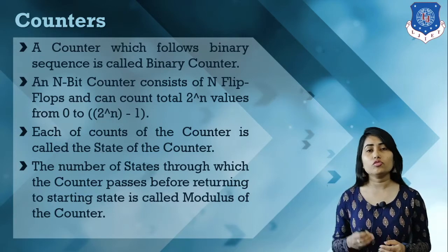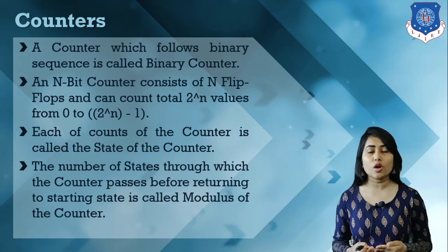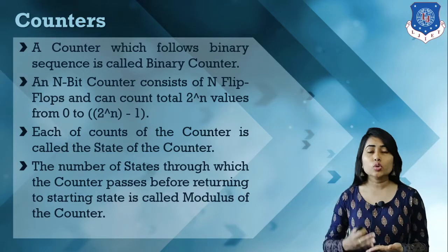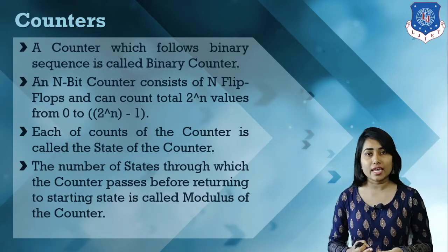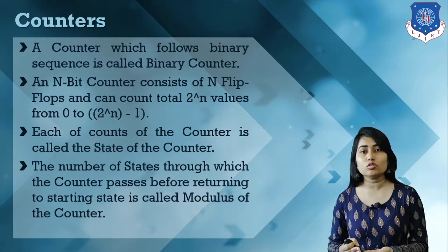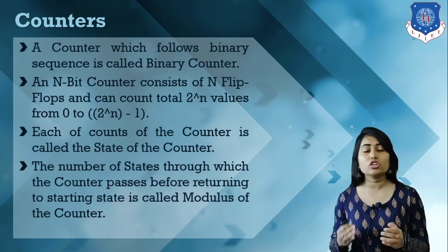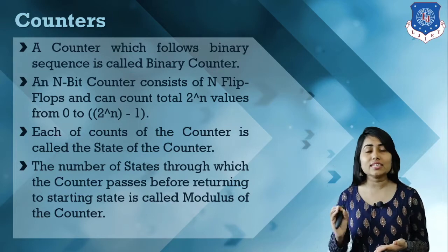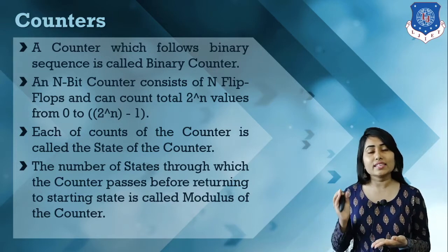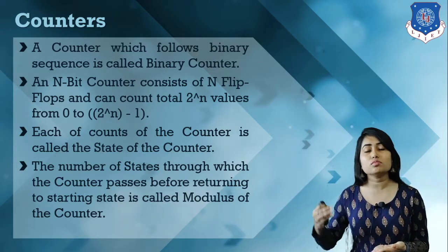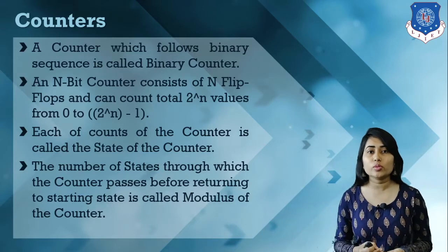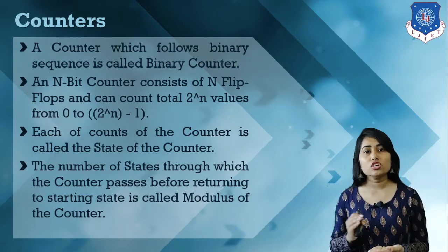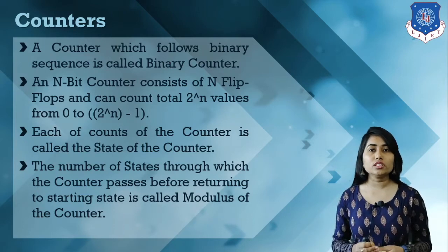The total number of possible states counted by our counter before restarting is known as the modulus of the counter. For example, a 3-bit counter calculates a total of 2 raised to 3, that means 8 values from 0 to 7. So these 8 states represent the modulus of that counter — for a 3-bit counter, the modulus is 8.